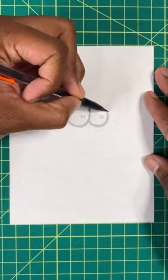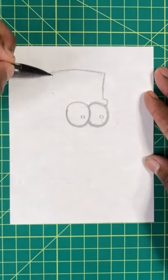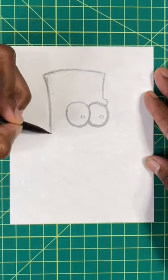Step one, we're going to draw two ovals for the eyes. Now for our second step, we're going to draw out the shape of Bart's head. After that, we're going to draw out his ear.